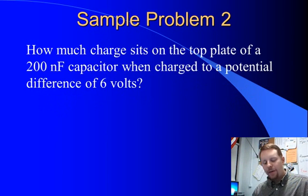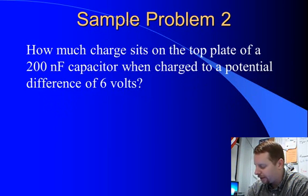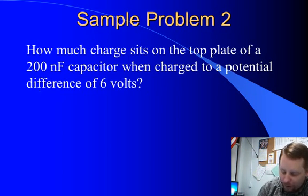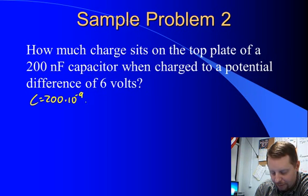Another example, how much charge sits on the top plate of a 200 nanofarad capacitor when charged to a potential difference of 6 volts? Well, our charge here, we're looking for charge. Our capacitance is 200 nanofarads, or 200 times 10 to the minus 9 farads. Our potential difference is 6 volts. We're looking for Q.